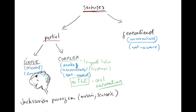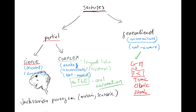In generalized seizures you can have the grand mal — the tonic-clonic seizure, like the woman in the example — but you can also have only tonic seizures, clonic seizures, or atonic seizures where the patient is totally flaccid. Another special type is absence seizures, also called petit mal in old terminology. Grand mal means 'big bad,' petit mal means 'a little bad.'